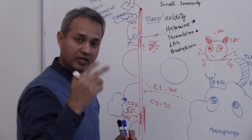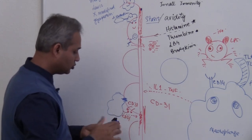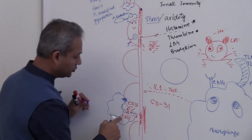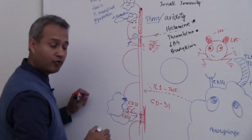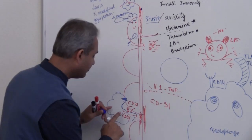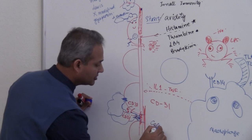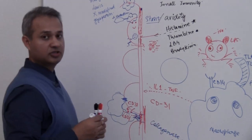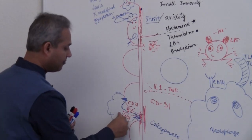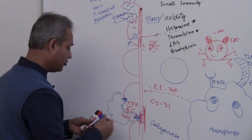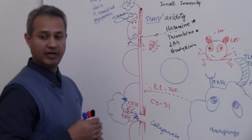Selectins were used to slow down the neutrophil. Integrins were used to stop the neutrophil. Now CD31 facilitates transmigration. As the neutrophil moves towards the tissue using CD31, it has to break down the basement membrane, which is made of collagen. The neutrophil pours granules containing collagenase — from the primary granule — which digests the collagen, and the neutrophil ends up inside the tissue.